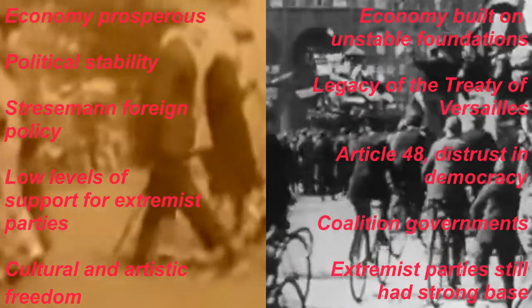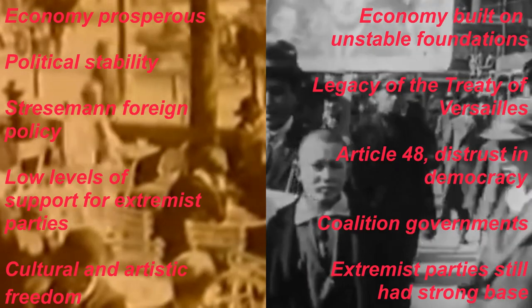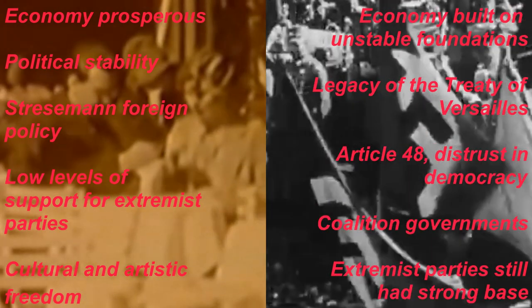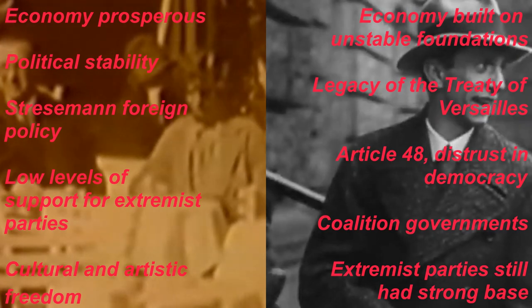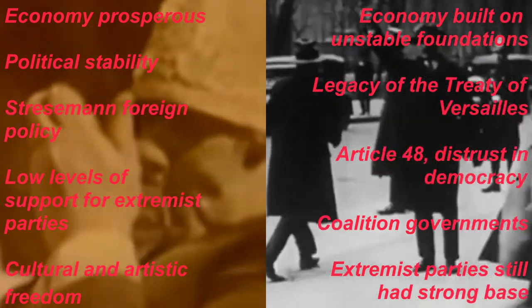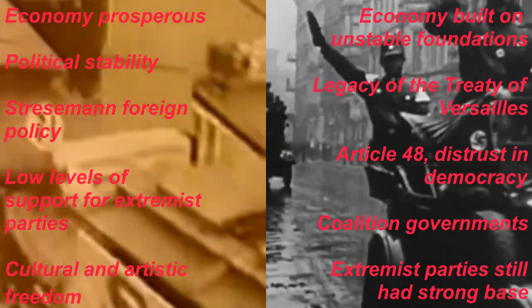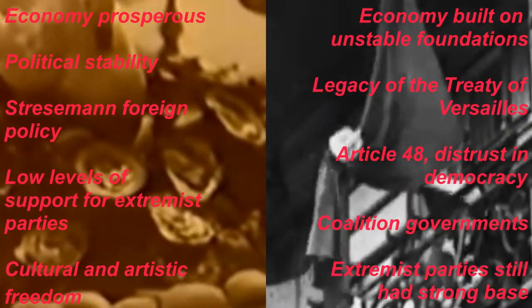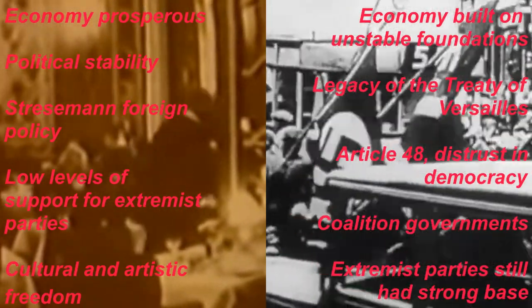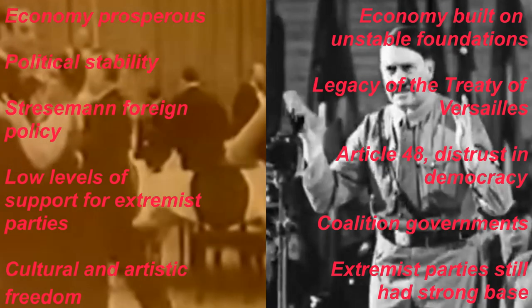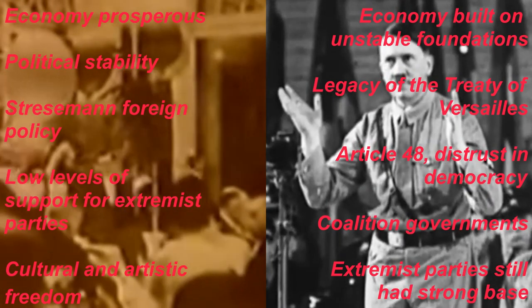We know about Article 48, which was in the Constitution and would allow potentially for that Constitution to be subverted by one person, allowing the Reichstag and Parliament to be overridden. So there was still a general distrust in democracy. Coalition governments were still a problem throughout the mid-1920s during the so-called Golden Years, and because of the proportional representation system of voting there was a propensity to have several parties working together rather than one single party. There were still extremist parties with a strong base of support among some Germans.